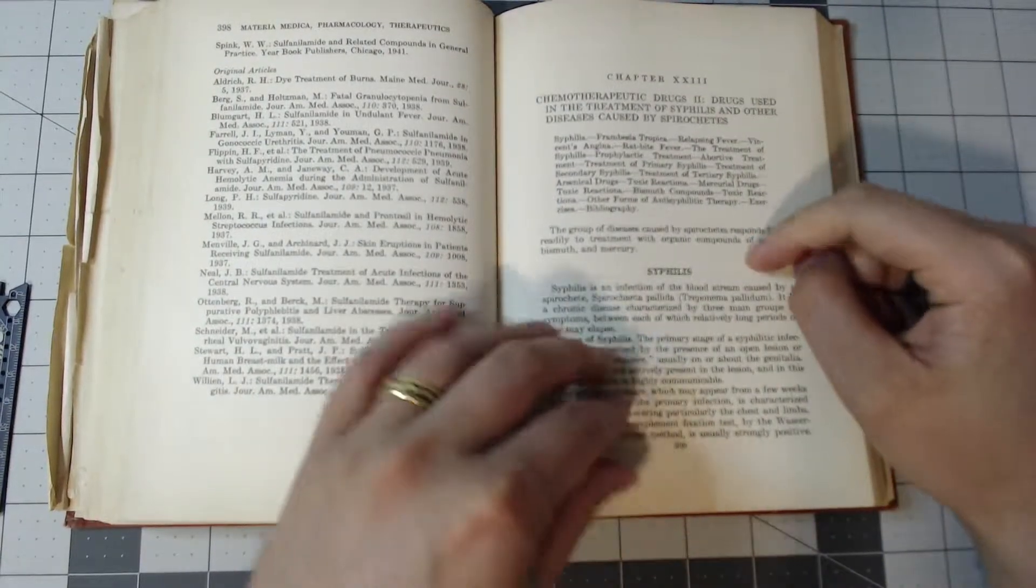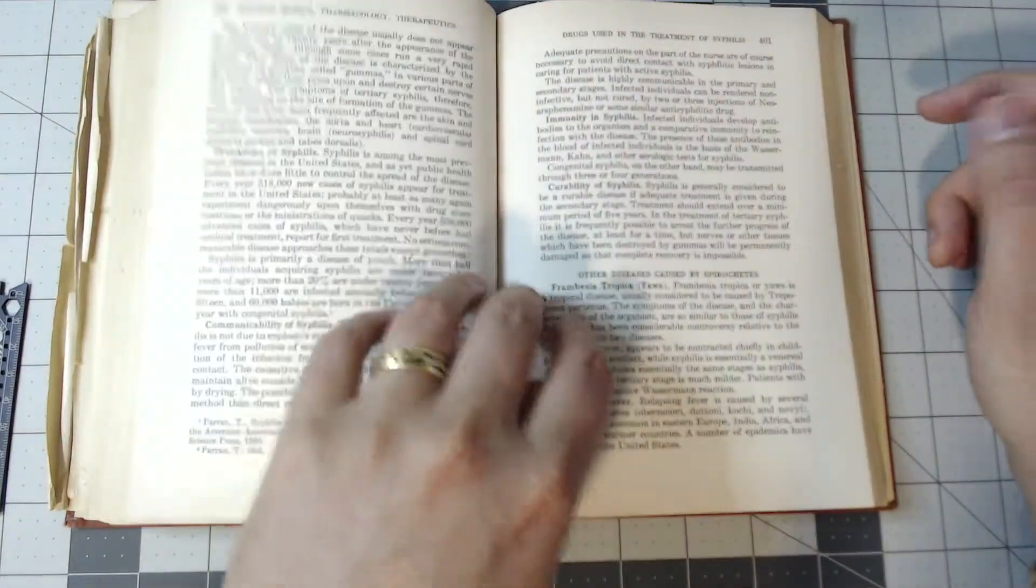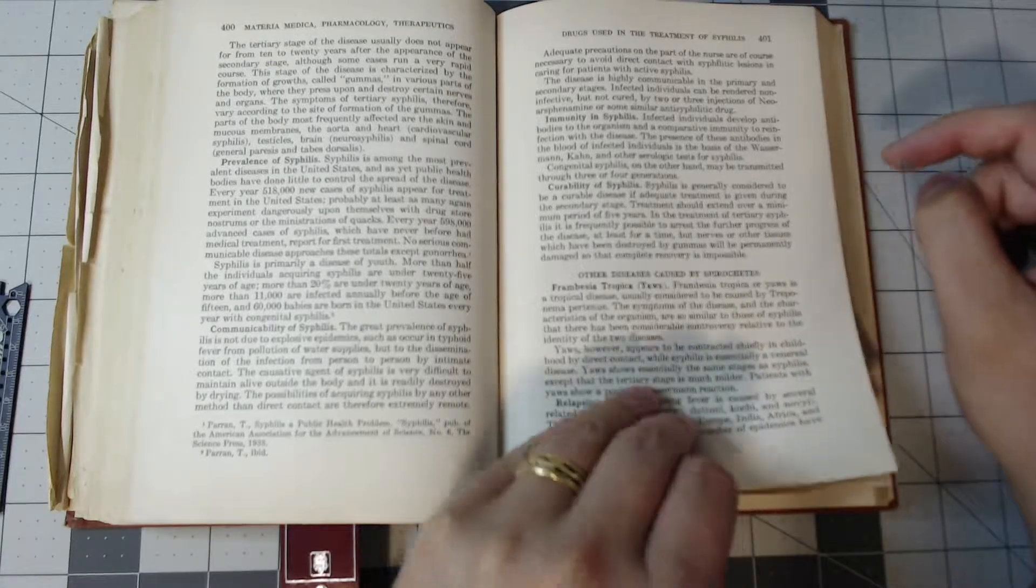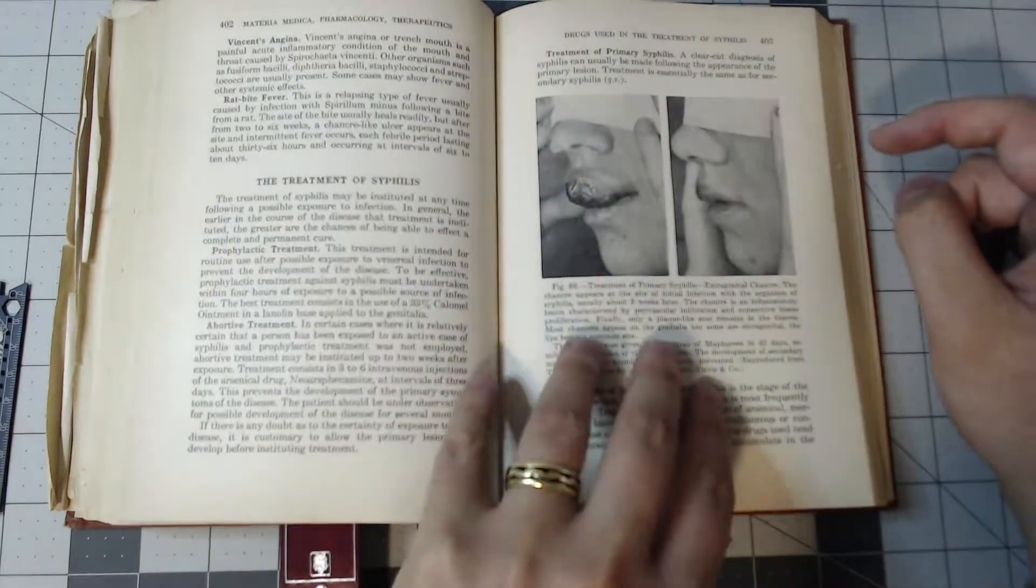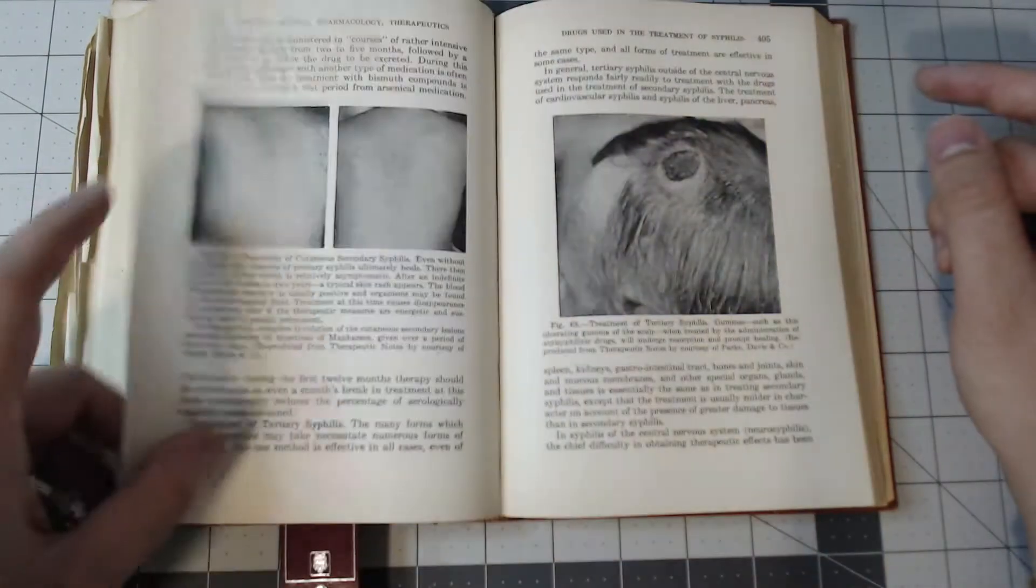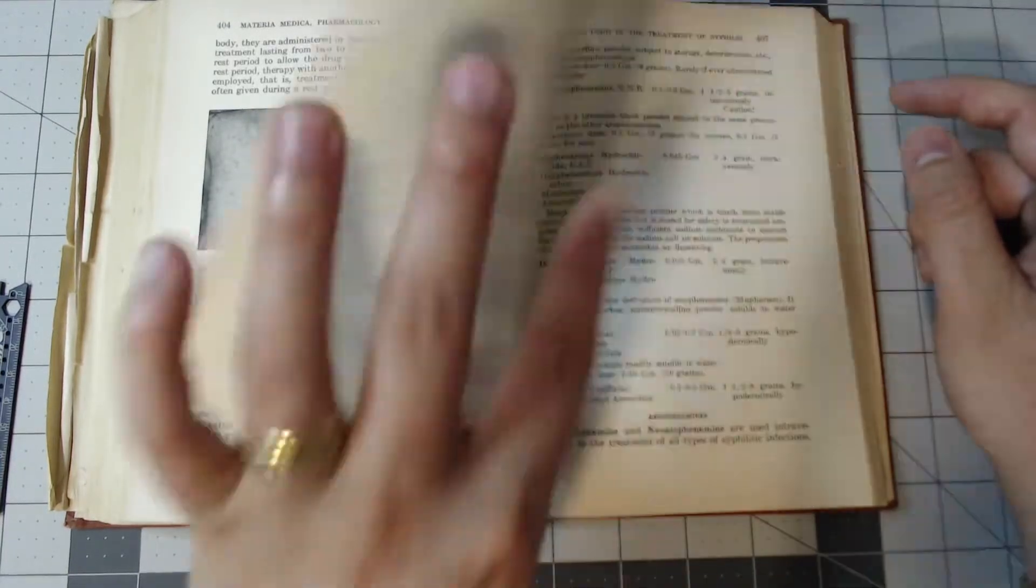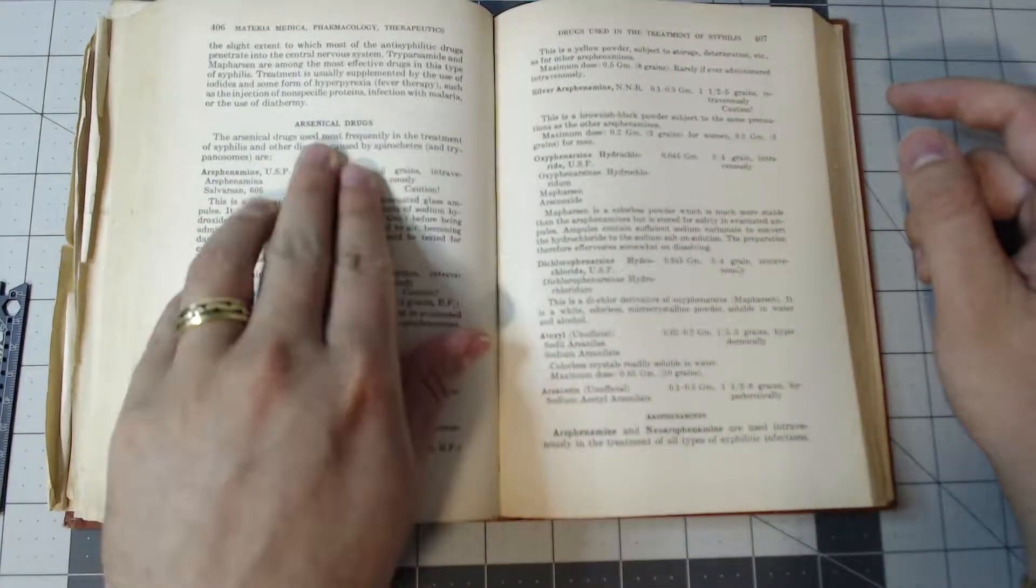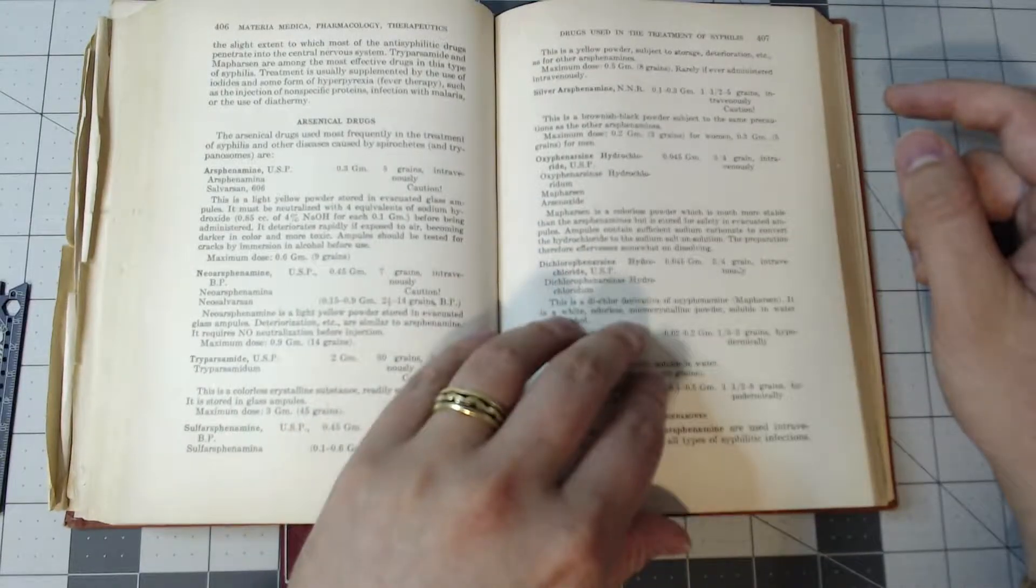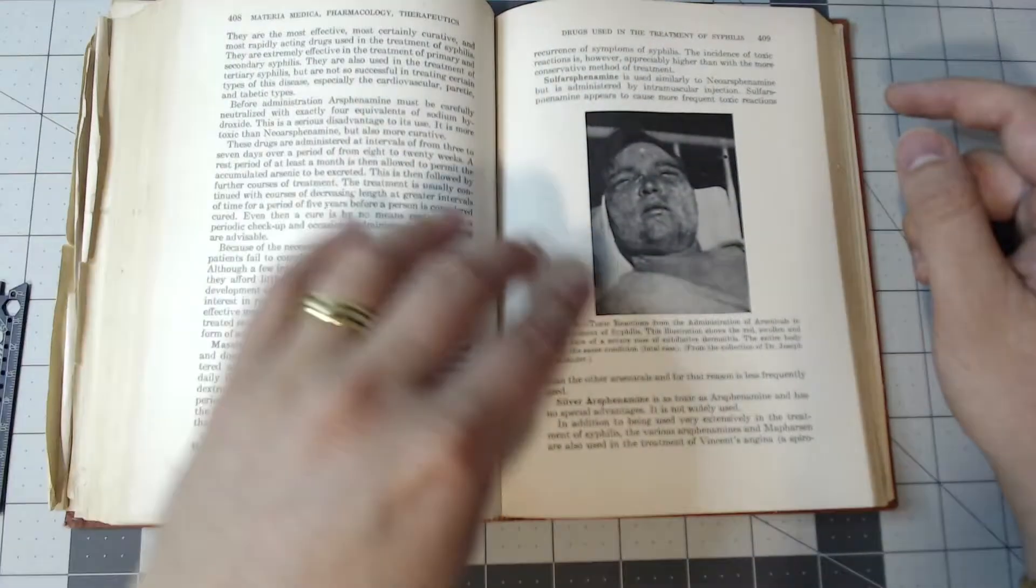But syphilis, that's what I want to talk about, because syphilis was a huge problem back then. Treatment in terms of how you actually got through it, there's even talks about yaws back then. They break into prophylactic treatment, abortive treatment, secondary syphilis, primary syphilis, and just its impact on the body. And what they're using is arsenical drugs, arsenic derivatives for treatment of syphilis. I think that's quite interesting because we don't do that. We have antibiotics that we use.